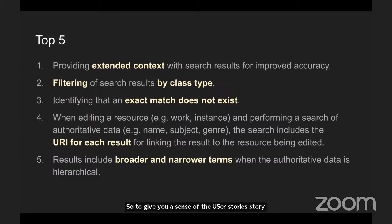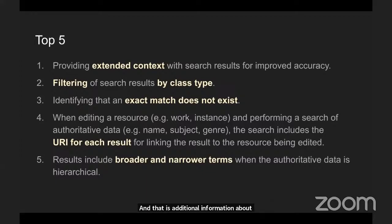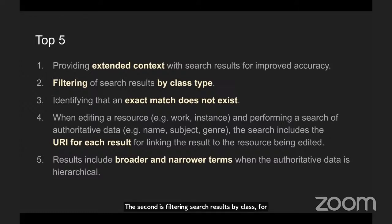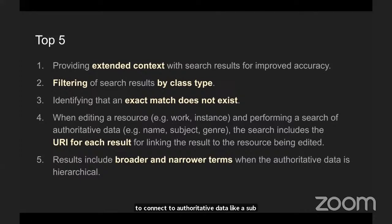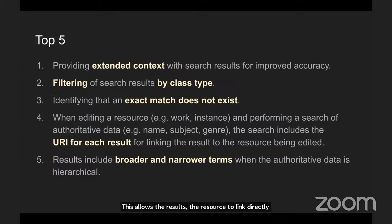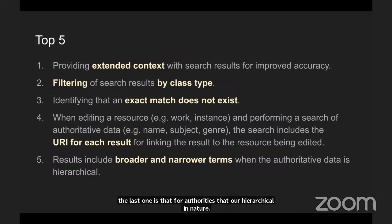To give you a sense of the user stories, these are the top five in the priority group. The first is including extended context — additional information about each search result that helps the user make a more accurate selection. The second is filtering search results by class; for example, when searching for names, you might want to limit to just person names, filtering out organizations. When searching for an exact match, the user wants to know if that exact match doesn't exist. When editing a resource like a work where you want to connect to authoritative data like a subject, the search needs to include the URI for each result, allowing the resource to link directly to the exact result selected. And the last is that for authorities that are hierarchical in nature, users want to see broader and narrower terms included in the search results.